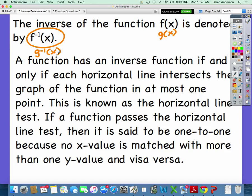If a function passes the horizontal line test, then it's said to be one to one, because no x value is matched with more than one y value and vice versa. No one y value is matched with more than one x value. So a quadratic would not pass your horizontal line test, which means that you wouldn't have an inverse function. Absolute value would not pass the horizontal line test. Does everybody see that?